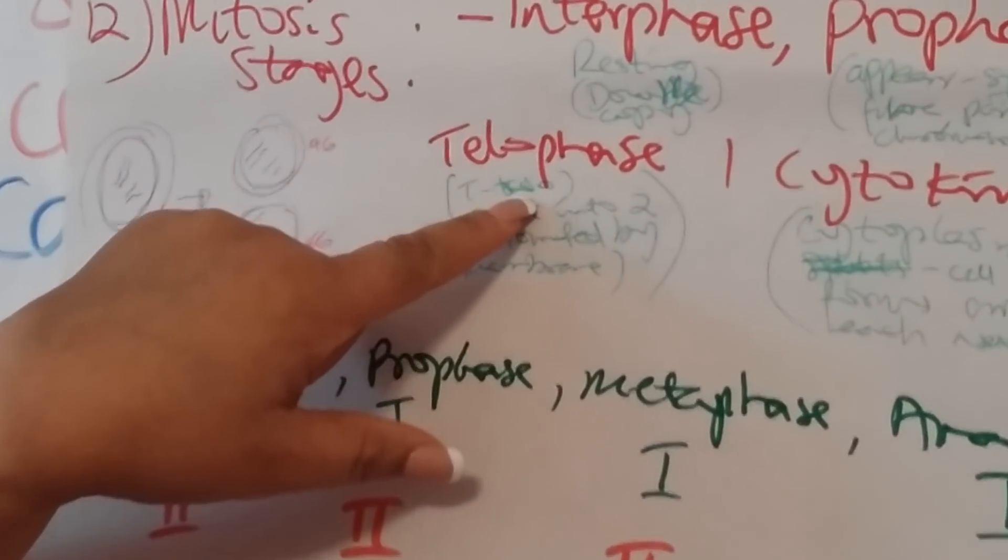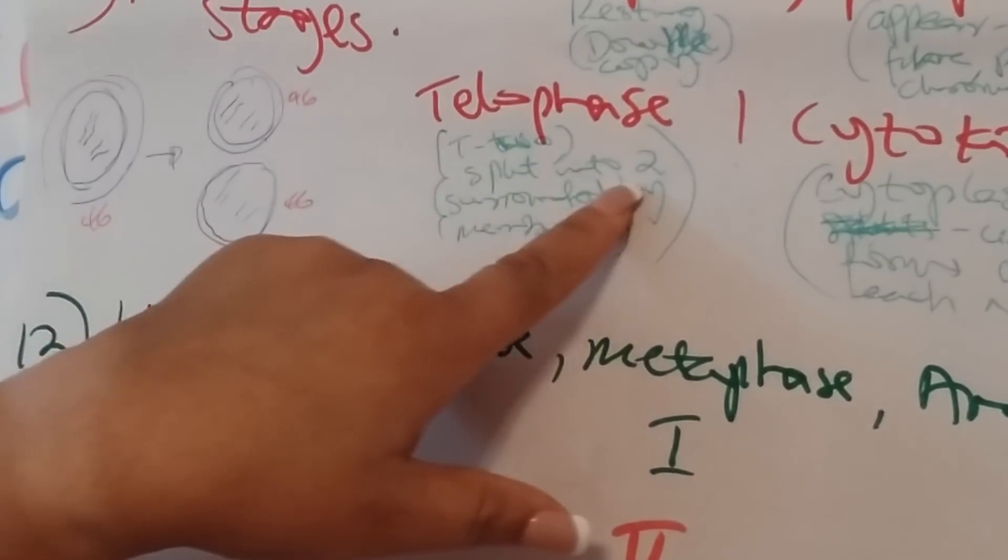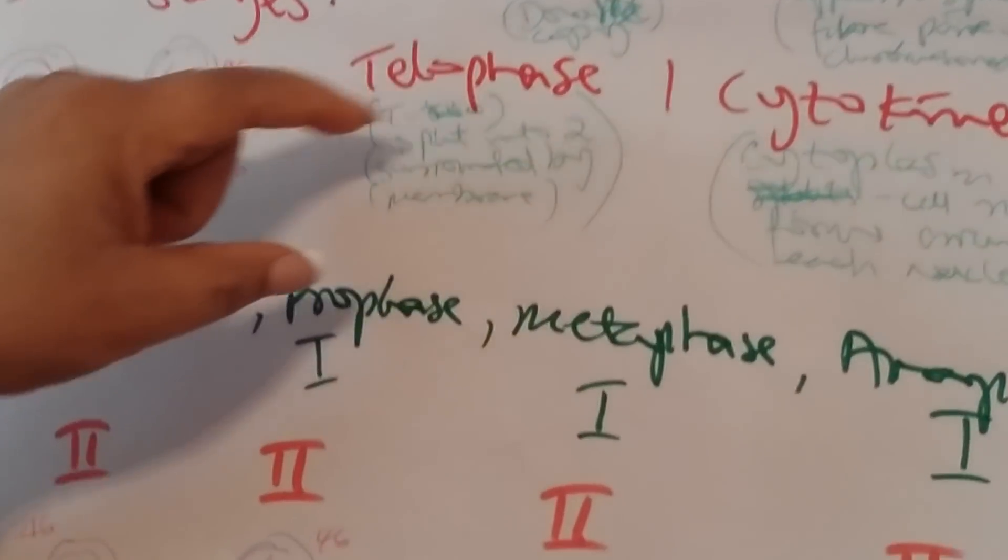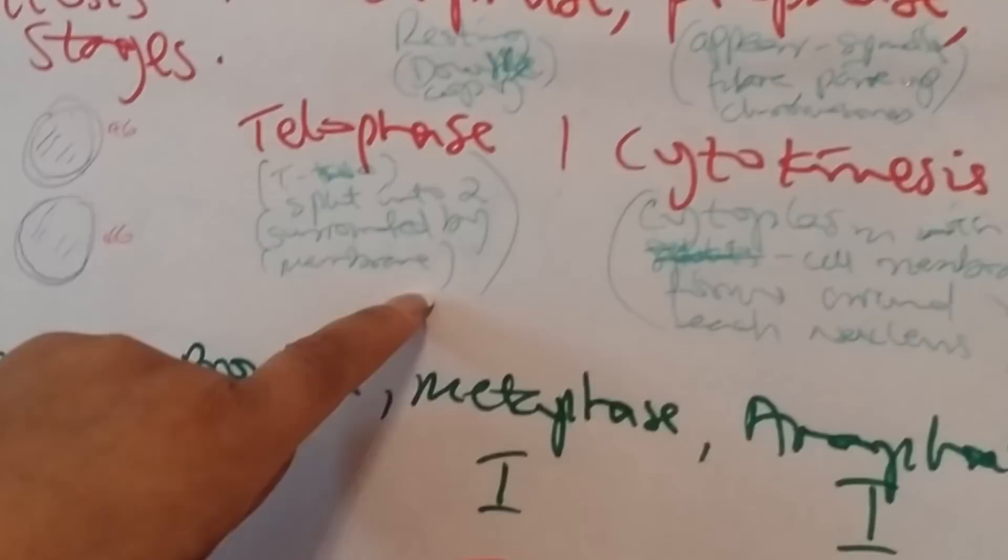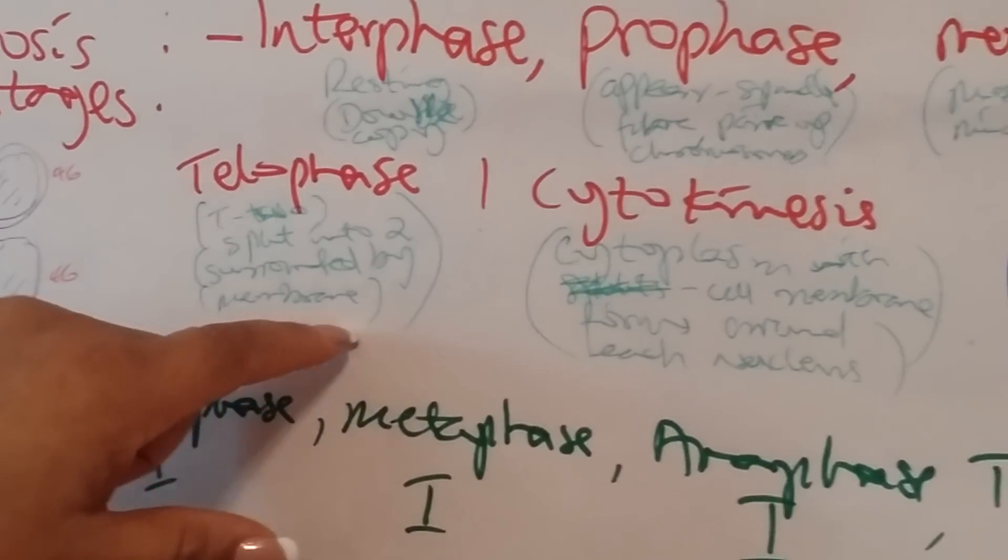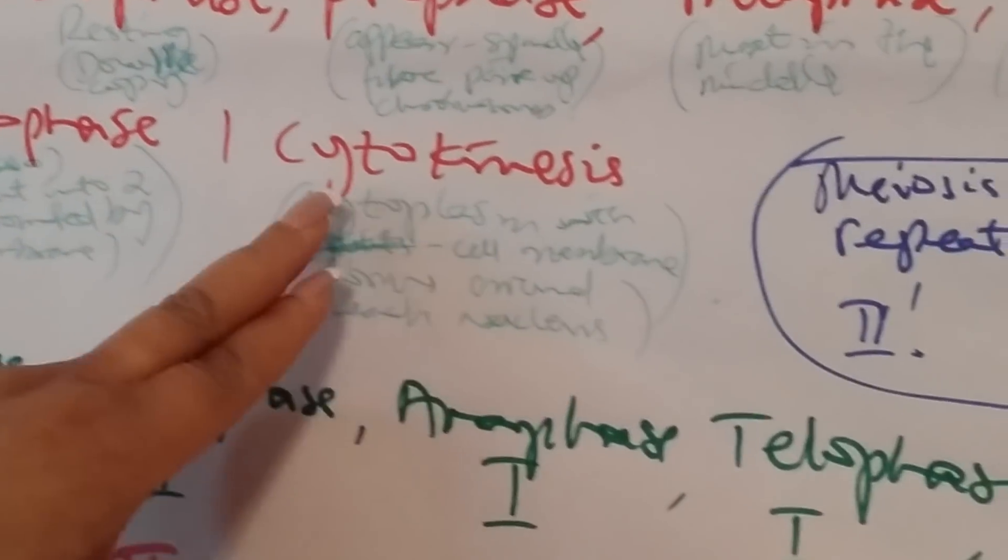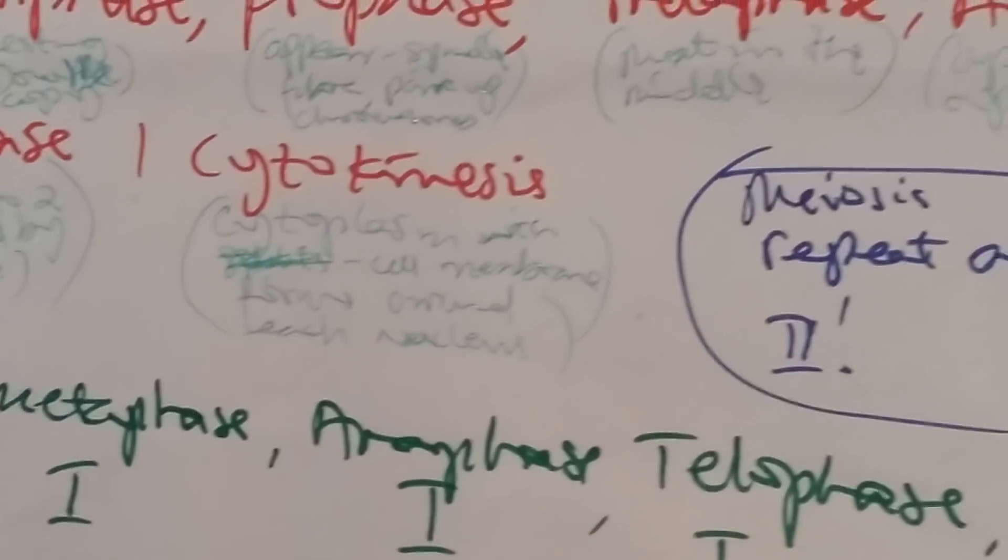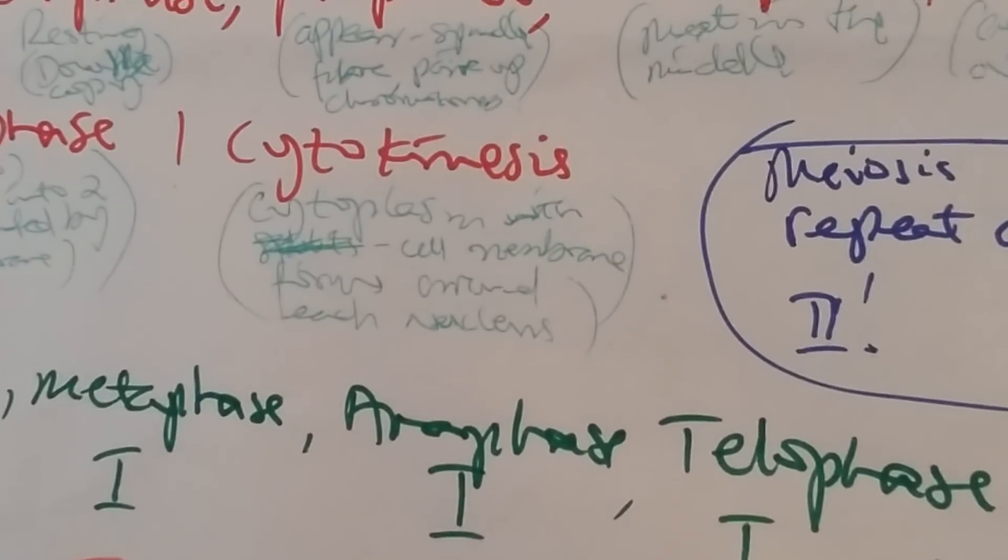Then anaphase—apart, chromosomes pull apart to the edge of the cell. At telophase, T for two, they split into two, each surrounded by a nuclear membrane.